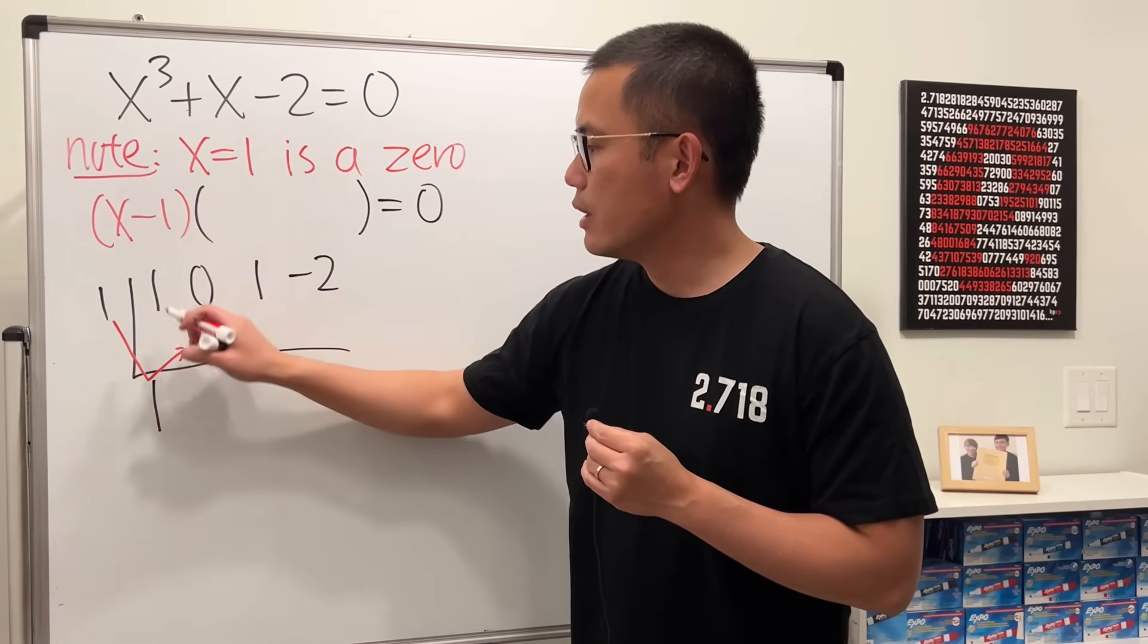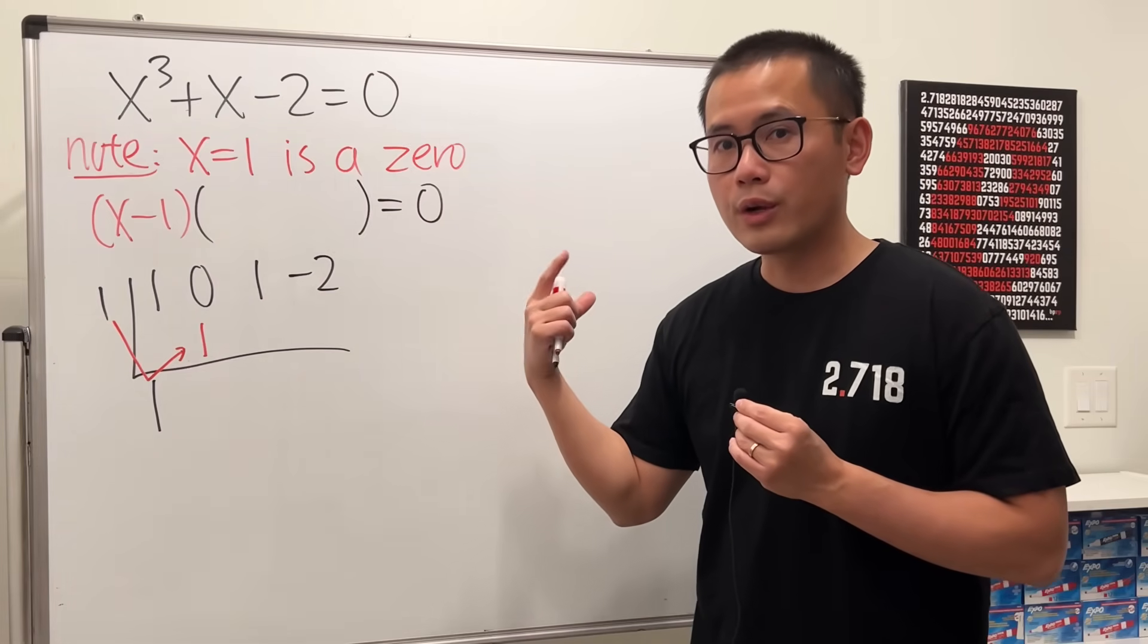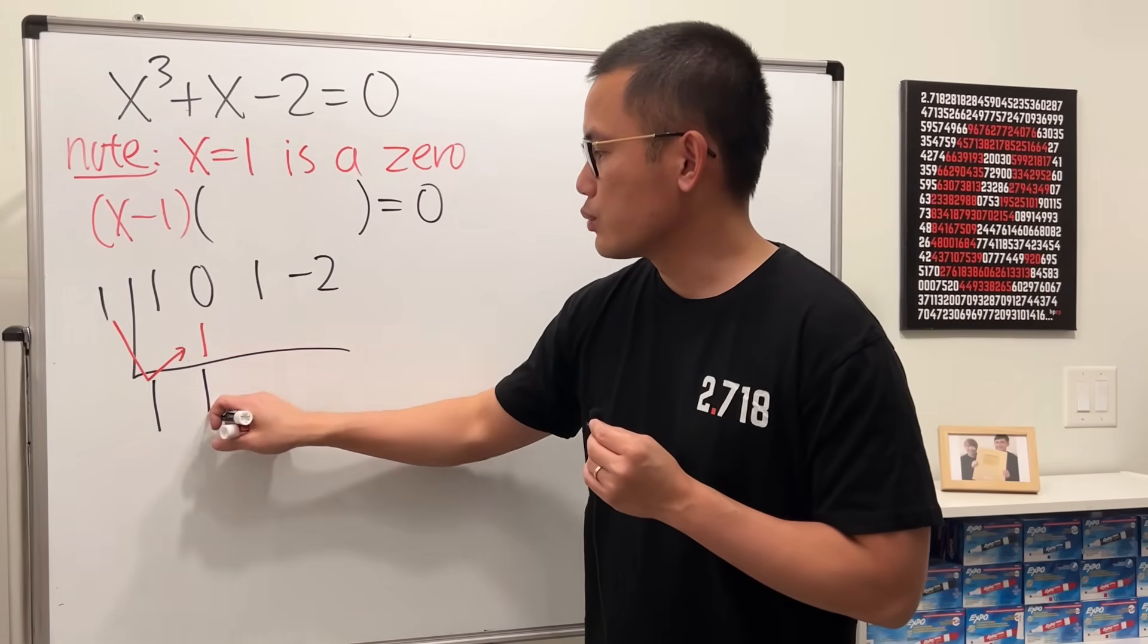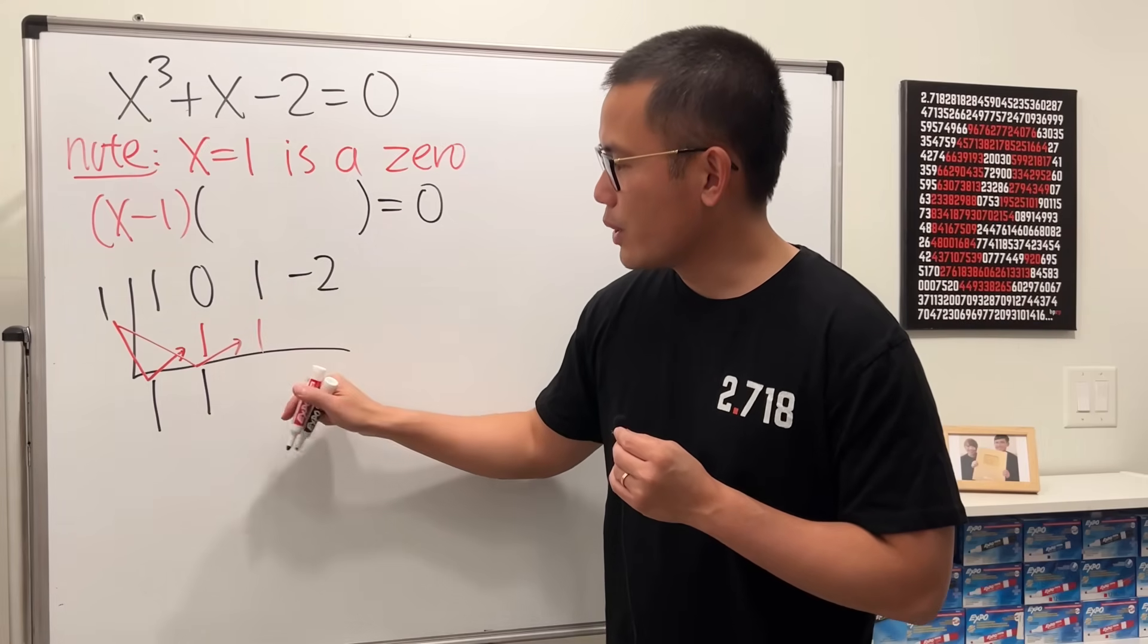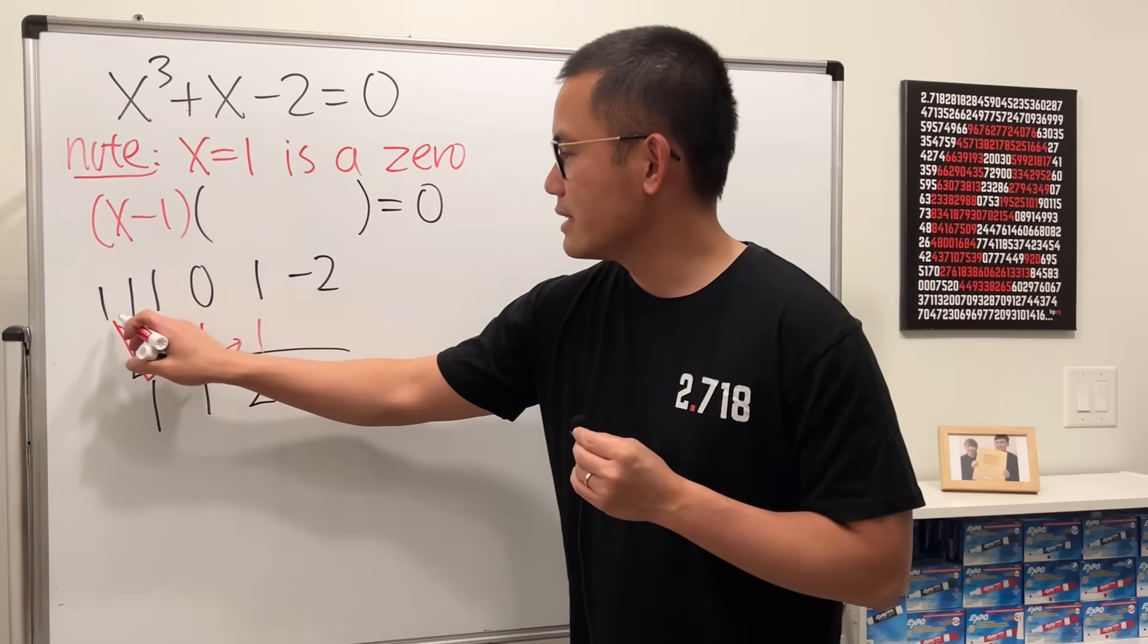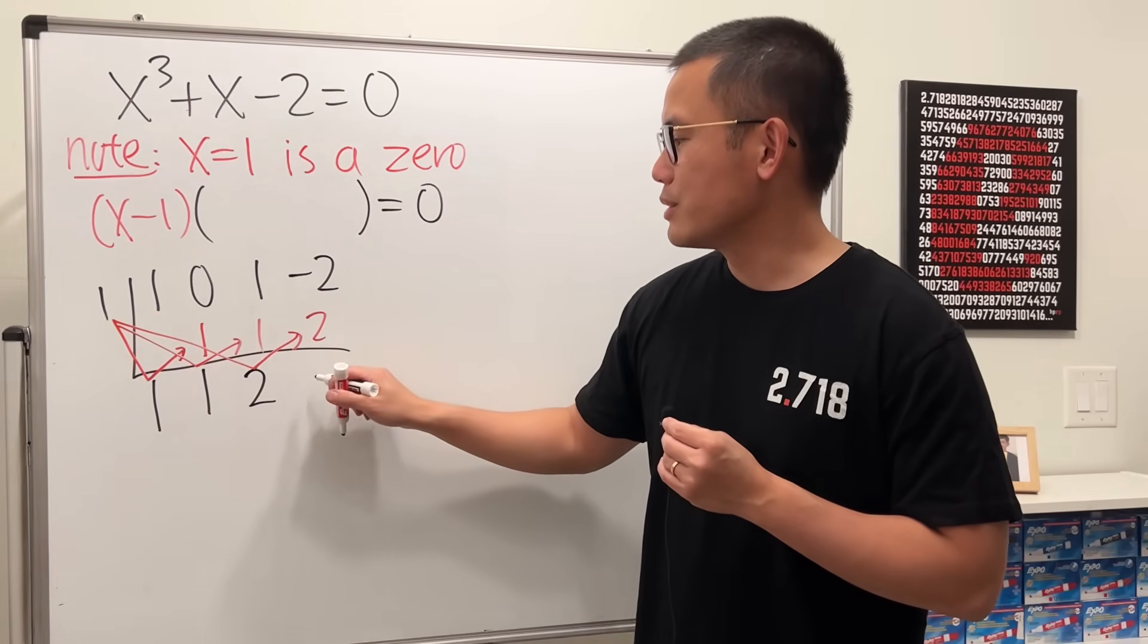This is how we continue: bring down this number which is the 1, and then we will take this 1 times this and put it here. 1 times 1 is 1, and for synthetic division we are going to add: 0 plus 1 is 1, and then continue this times this, put it here, is 1. 1 plus 1 is 2. And then lastly this times this, which is 2, and then minus 2 plus 2 is 0.